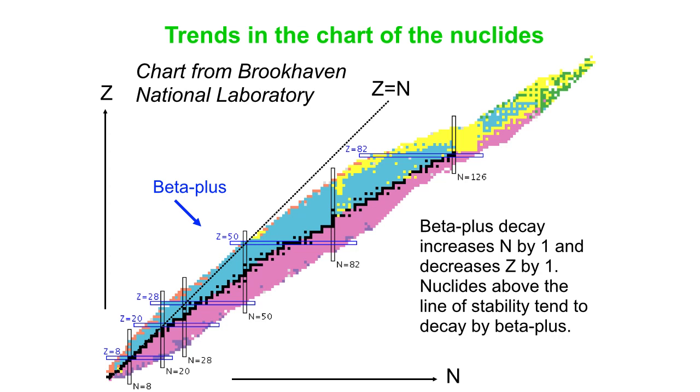And in general what happens is beta plus takes you down and to the right. And if you're above that zone of stability there it would take you toward that zone of stability. So beta plus increases neutrons by one and decreases protons by one, because a proton in beta plus turns into a neutron and a positron and an electron neutrino.